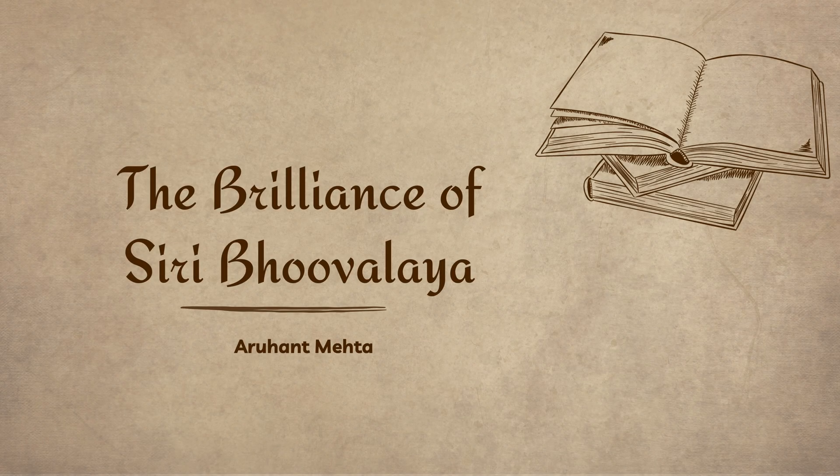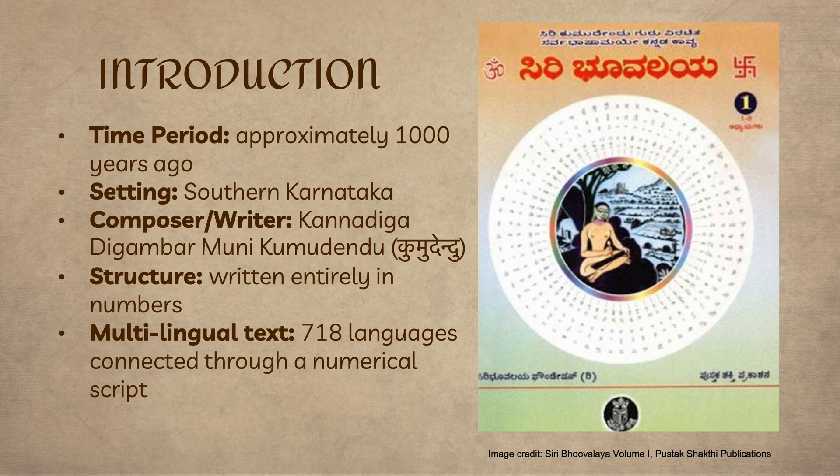Hello everyone, welcome to this presentation on ancient India's most remarkable literary and mathematical text. Siddhi Bhulai is a Jain manuscript composed entirely in numbers — absolutely no words have been used. What's more, it is said to contain 718 languages. Seems ridiculous, right? So many languages through some mysterious numerical script? How this seemingly magical system works will become clearer in just a bit.